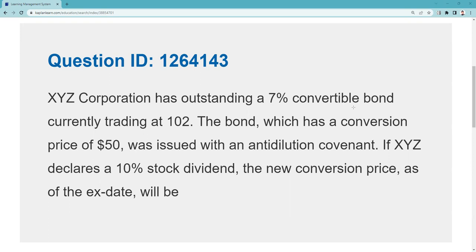This is an explication request for QID 1264143. There was another explication request I'd already done. I want to remind you, before you send an explication request — either in the Reddit search bar or on the YouTube channel search bar — you can put in, for example, 'convertible' or 'parity' or 'margin,' to see if I've already helped a test taker previously on that same question.